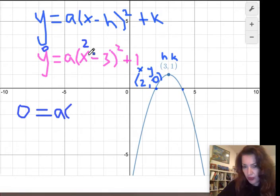2 minus 3 we already know is negative 1. So I'm just going to put negative 1 squared and then plus 1.